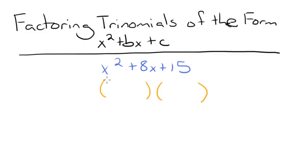Now we consider the first term, x squared. What two things multiply together to get x squared? Well, x times x equals x squared, so x will be the first term in both sets of parentheses.